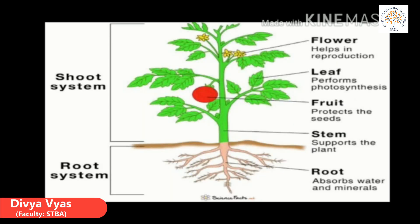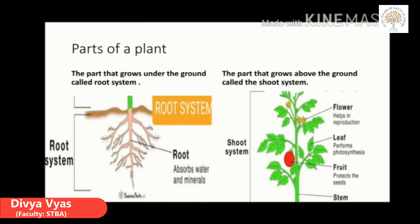Just like we have some body parts which we use to do so many things, plants also have different parts to carry out different functions. Though different in size, most plants have some basic parts. Each part has its own work to do. A plant has two main parts: first, the root system; second, the shoot system.